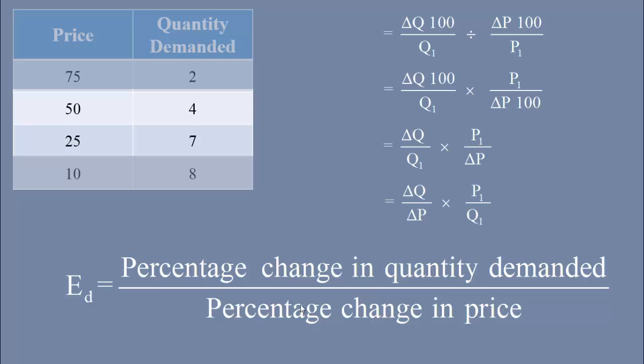By rearranging the terms, we get delta Q by delta P times P1 by Q1. The subscript 1 in both P and Q stands to denote initial price or original price and initial quantity or original quantity. For our convenience, let us do away with the subscripts. Finally, the formula is delta Q by delta P times P by Q.